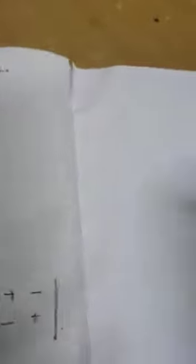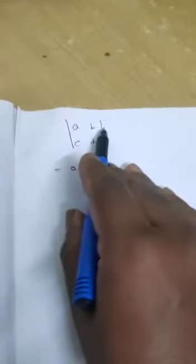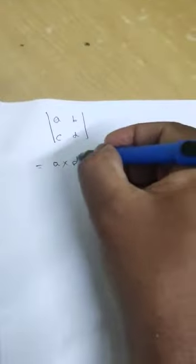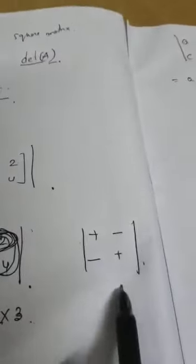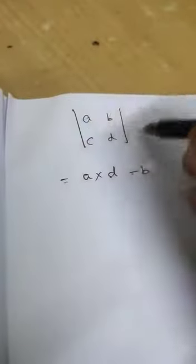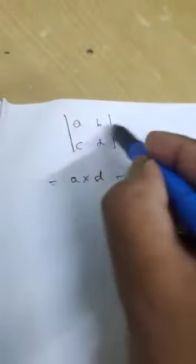To generalize, consider a 2×2 matrix [A, B; C, D]. First, take A — its corresponding row and column are closed, leaving D. So A into D. The second element B has a minus sign, so minus B — its corresponding row and column are closed, leaving C. So minus B into C. Therefore, the determinant equals A×D minus B×C.